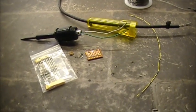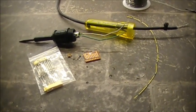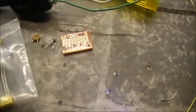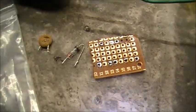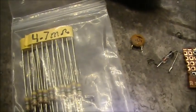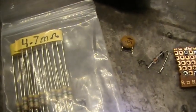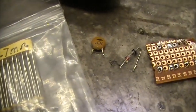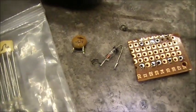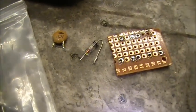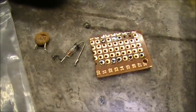Tonight's project is going to consist of three parts: a 4.7 meg resistor, a 0.01 ceramic cap, a little germanium diode, and a piece of perf board.